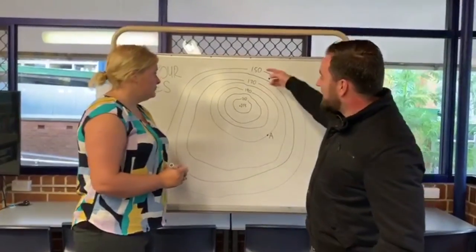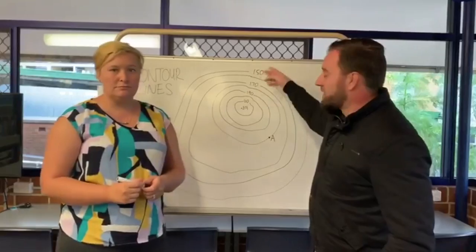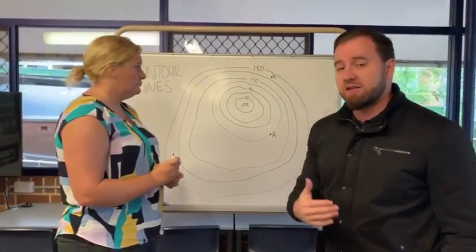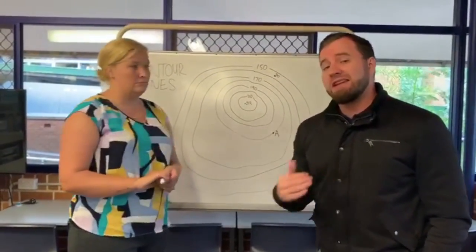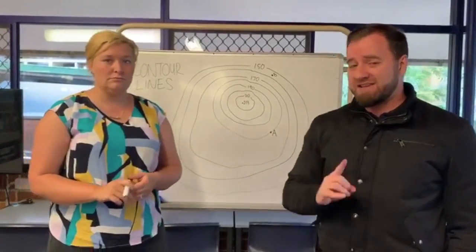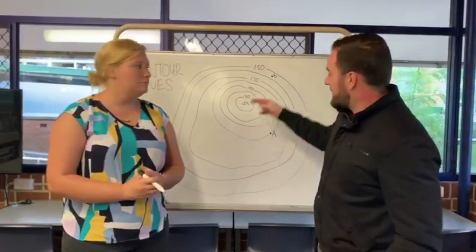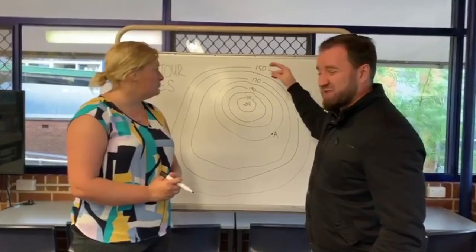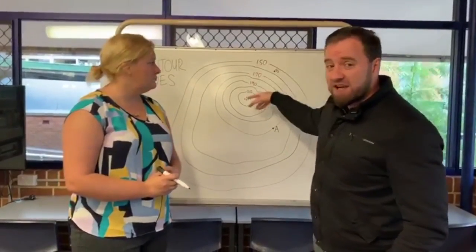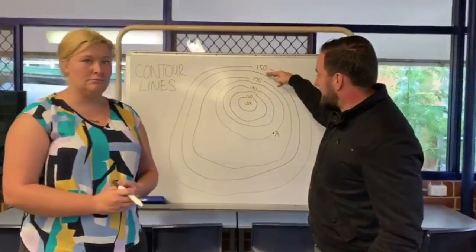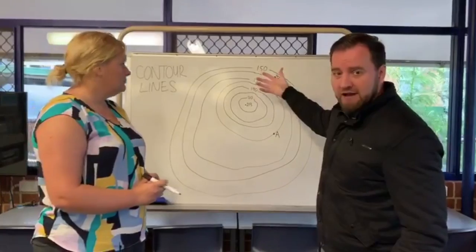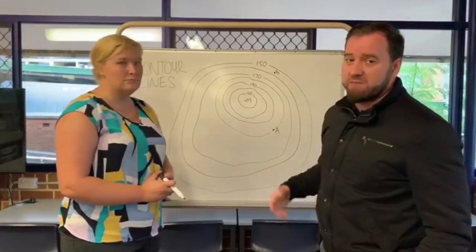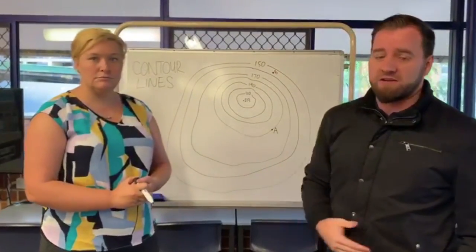You can see there are numbers on every second line and they're going up by 20. Sometimes people confuse that to think the contour interval is actually 20, but it isn't. Very important to remember: the contour interval is the difference between every line. So even though every second one is numbered, every line has to be taken into account. So every line here is 10, because each line goes up by 10.